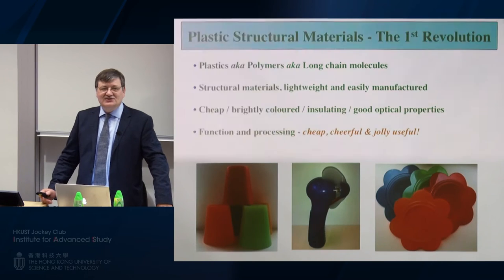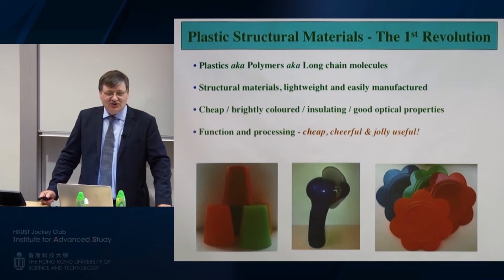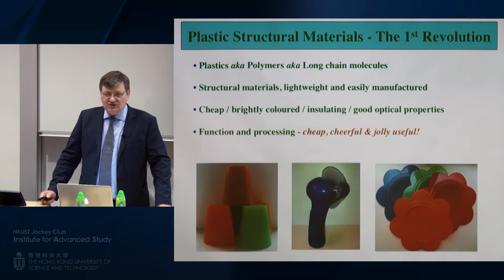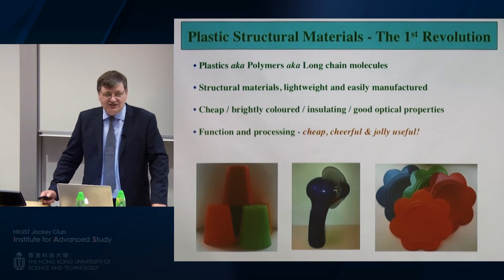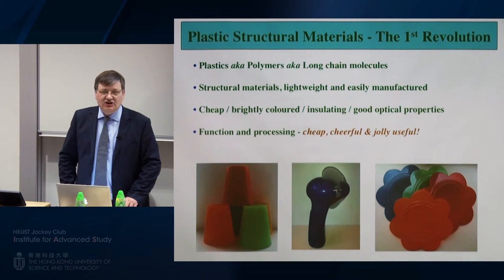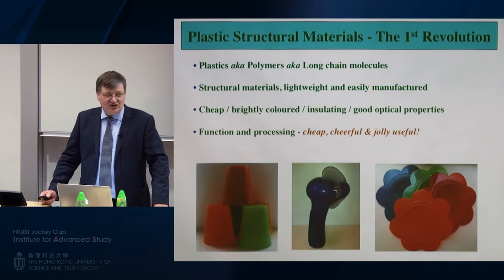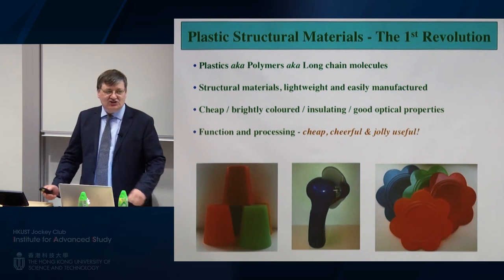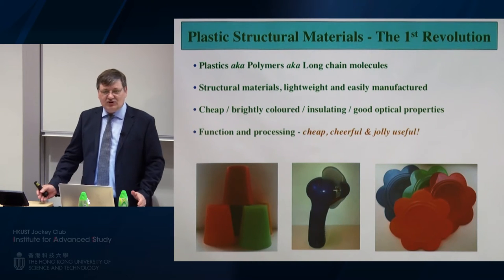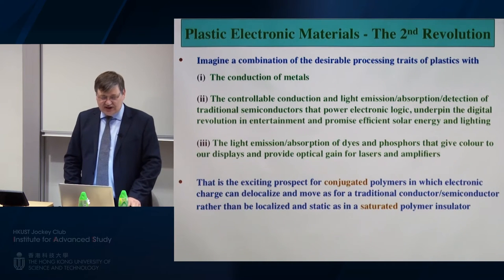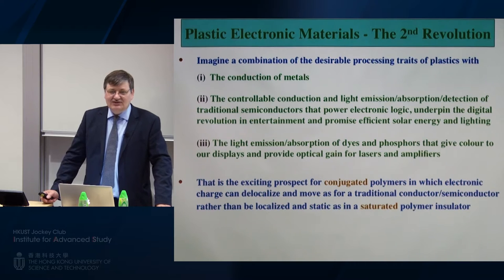Plastic electronics is, in some sense, the second plastics revolution. The first plastics revolution was using plastics as structural materials. Plastics, also known as polymers - long-chain molecules - have desirable properties as structural materials: they're very lightweight, easily manufactured, can be cheap, brightly colored, insulating, with good optical properties. It's the combination of function and processability - cheerful and jolly useful - that allows the transition from other materials to plastic structural materials. This combination of functionality and processability is also important when we think about plastic electronic materials.